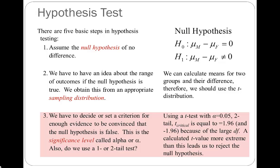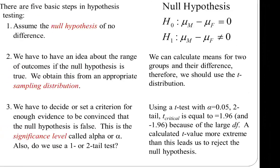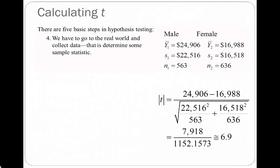Step three: we decide how much evidence we need, or how big a difference in average income between men and women, to reject the null hypothesis. I set alpha equal to 0.05, two-tailed. With the large degrees of freedom (n sub one plus n sub two minus two), my critical value is plus or minus 1.96. If my calculated t-statistic is less than −1.96 or greater than 1.96 I reject the null hypothesis, accepting a 0.05 probability of a Type I error. If it falls between −1.96 and 1.96 I fail to reject. Step four is to calculate the statistic.